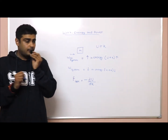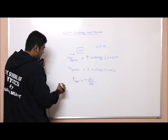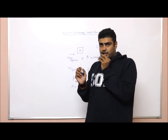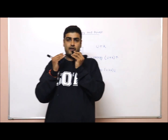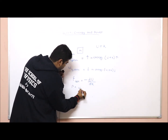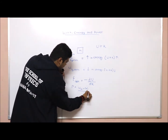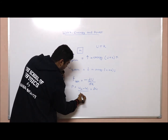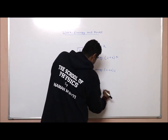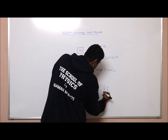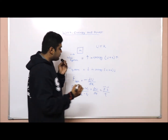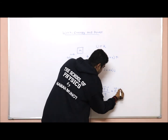The next thing we are going to see is power. Power equals force dot velocity vector. In simple terms, power is equal to the work done upon the time taken. So if we have work done as F·ds and we divide by time, the change in work done upon the time taken equals F vector dot v vector, and this is the power.